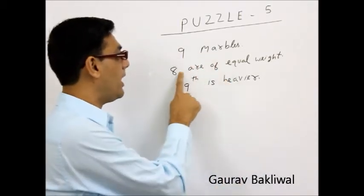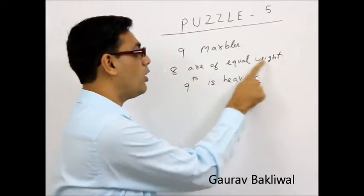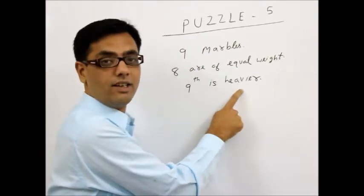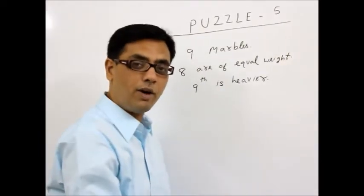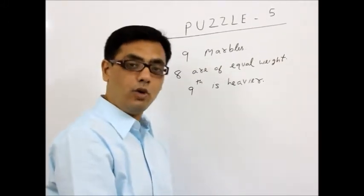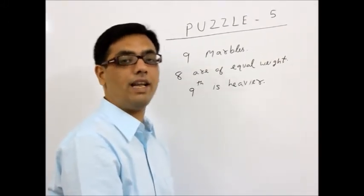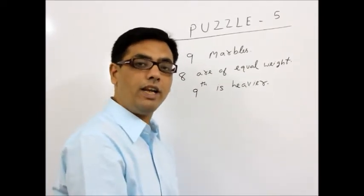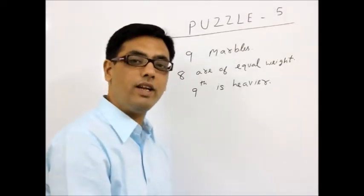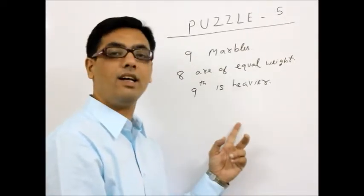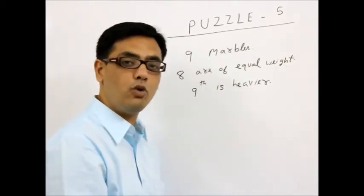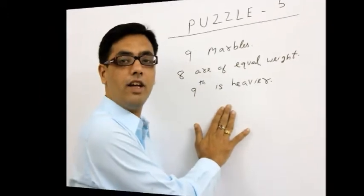There are 9 marbles. 8 of them are of equal weight, whereas the 9th marble is heavier. It is given to us that the 9th marble, the defective marble, is heavier than the remaining 8 marbles. You have got a common balance, a beam balance. How many minimum number of weighings would be needed to determine the heavier marble?